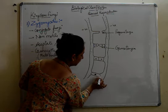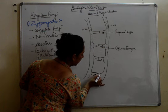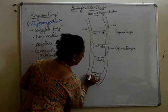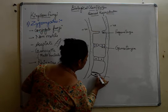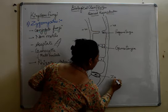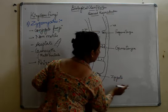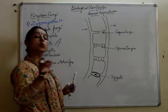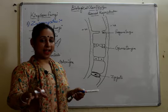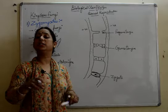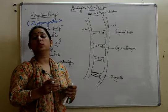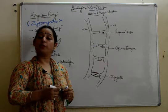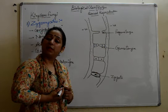The male and female nuclei fuse to form the zygote, and the zygote will form a thick layer around it. In certain conditions, the zygote remains intact with the hypha, but in certain conditions it splits up — it detaches from the hypha.